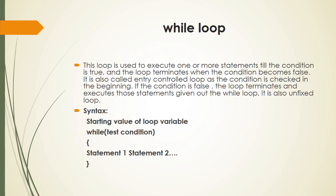This is called the for loop. The while loop is also an entry control loop. This loop is used to execute one or more statements till the condition is true, and the loop terminates when the condition becomes false. It is also called an entry controlled loop as the condition is checked at the beginning. If the condition is false, the loop terminates and executes those statements given outside the while loop. It is also called an unfixed loop.